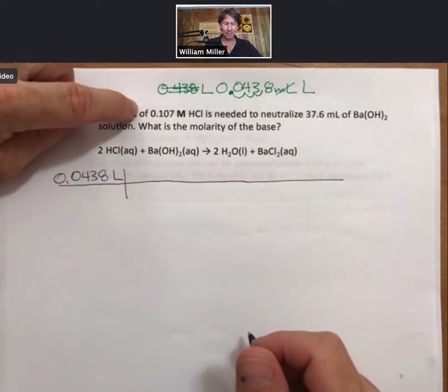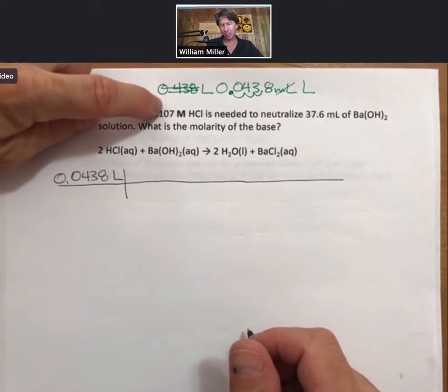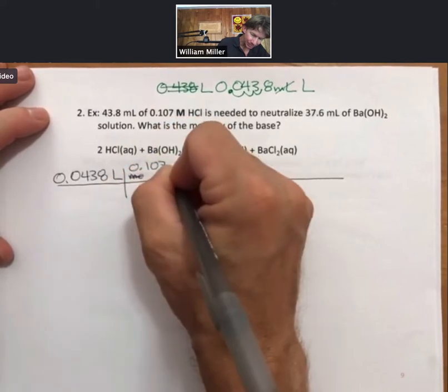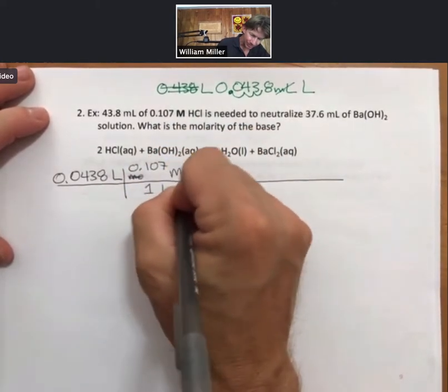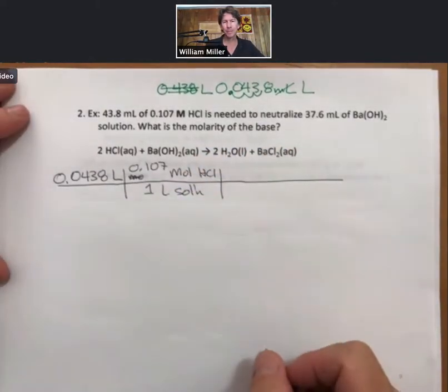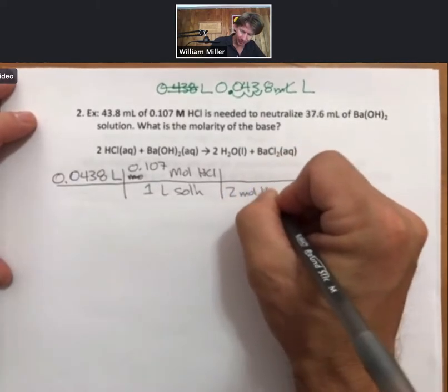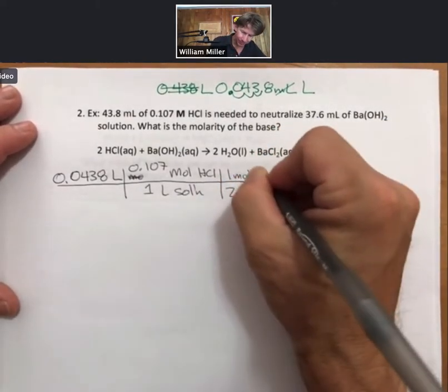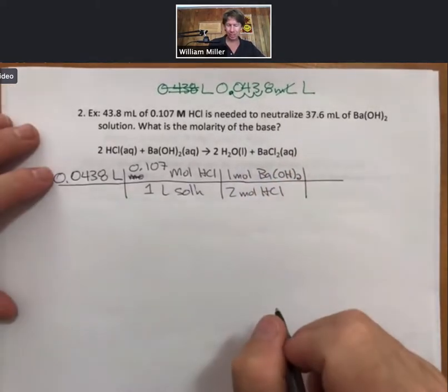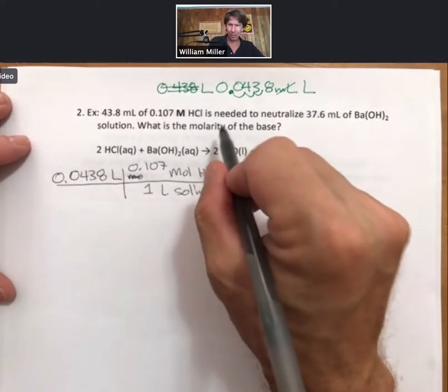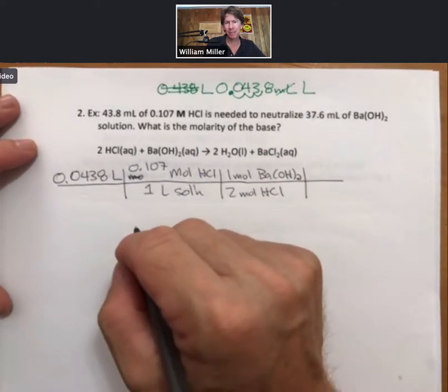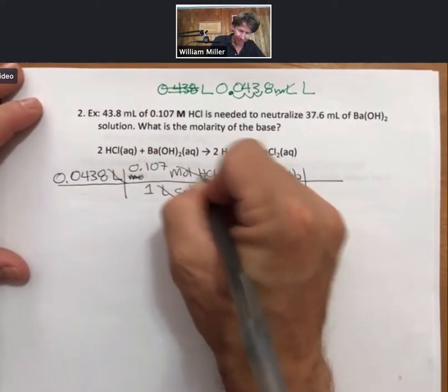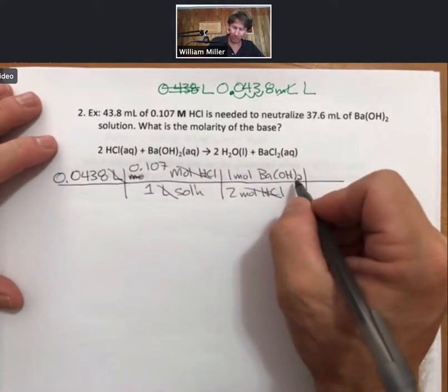Of means multiply. My molarity for HCl is 0.107 moles of HCl per one liter of solution. Then for every two moles of HCl, which has to go on the bottom to get my moles of HCl to cancel out, I need one mole of barium hydroxide. And I don't have another molarity. So I can't set this problem up just like I did the last problem.